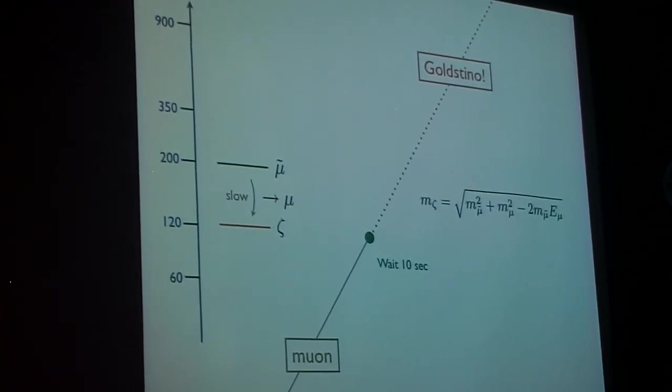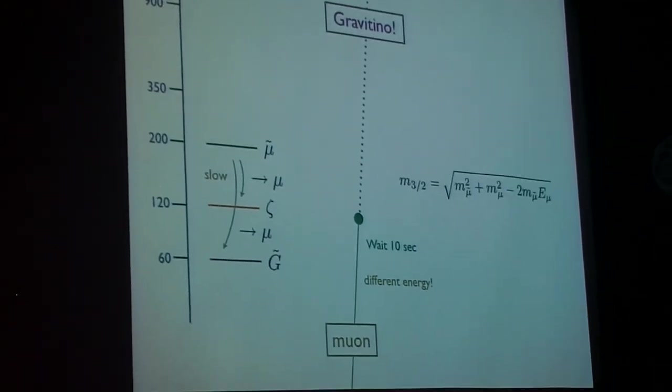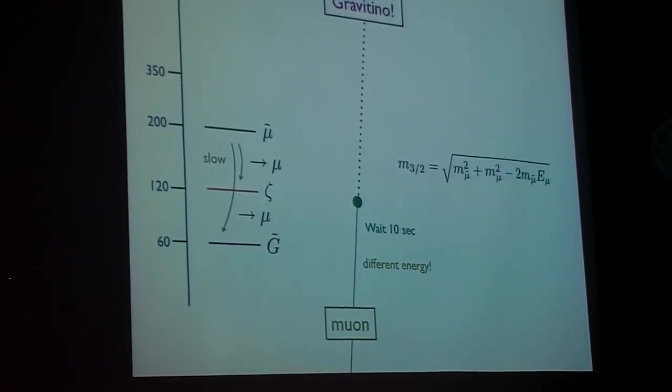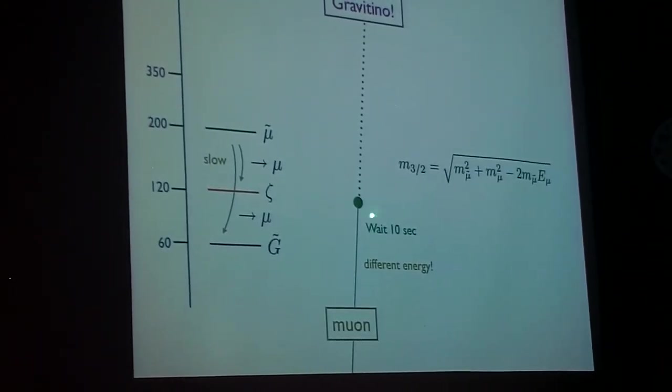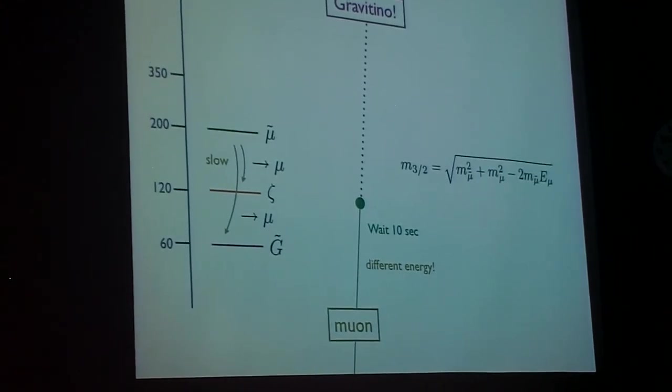...that sometimes, with a branching fraction of, let's say, 10 to the minus 2 or 10 to the minus 3, you'd actually see a muon screaming out with a different energy.